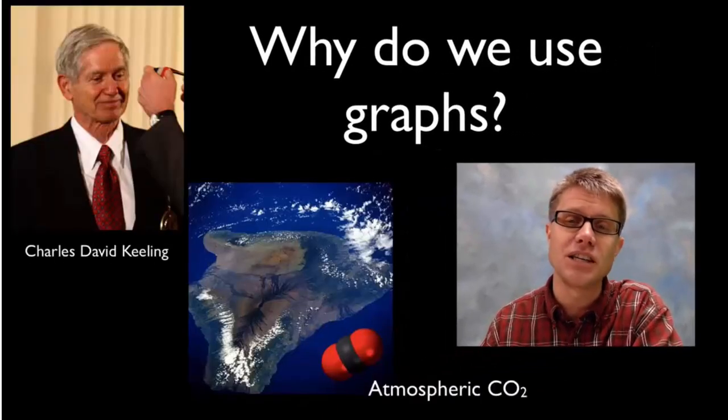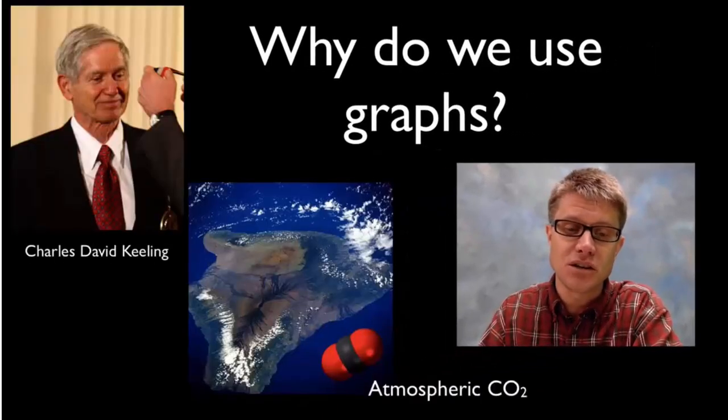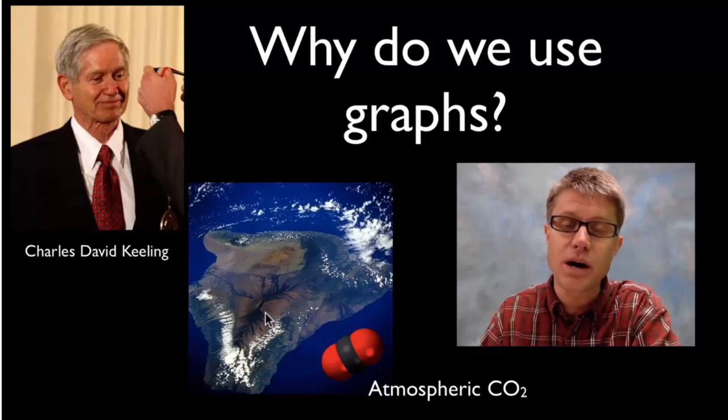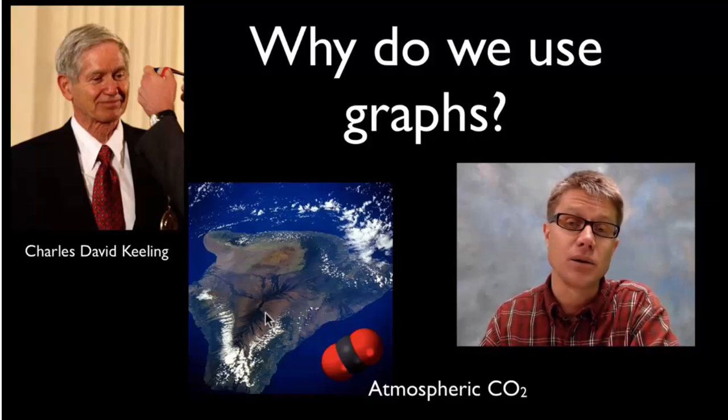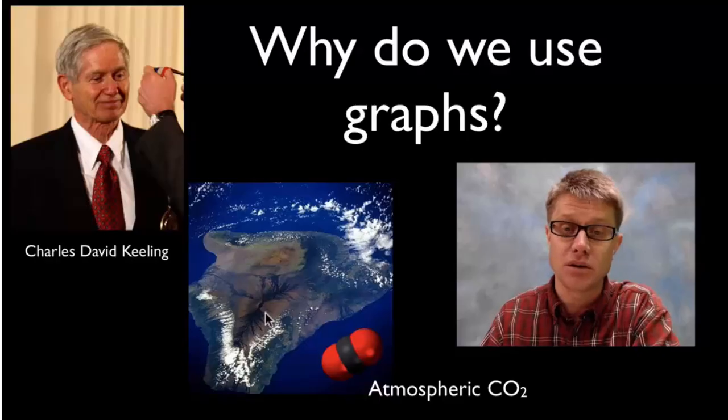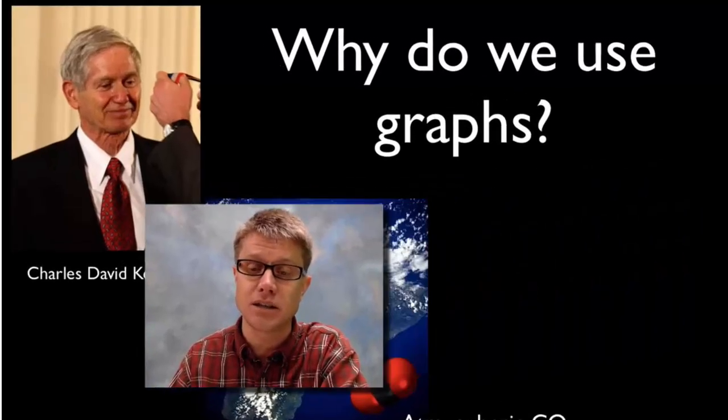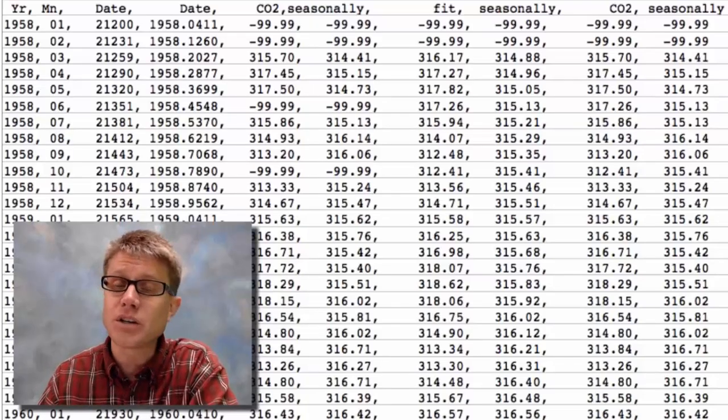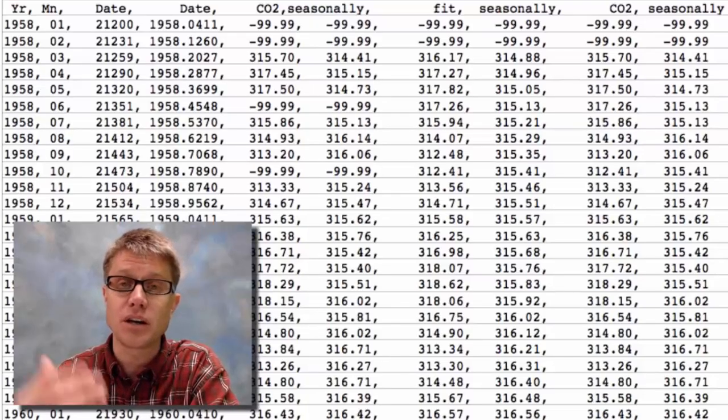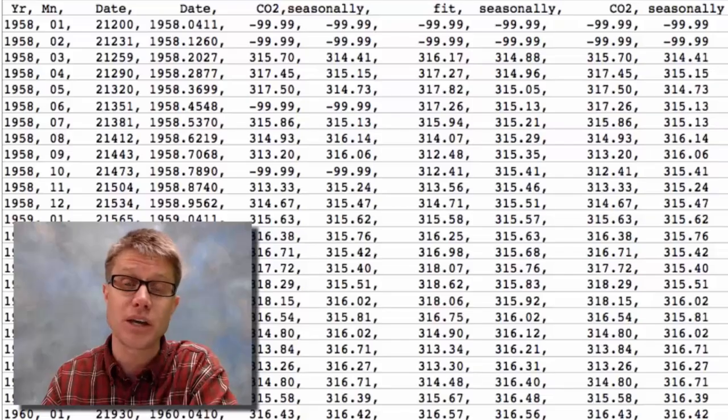This right here is Charles David Keeling. He spent years and years on top of Mauna Loa in Hawaii collecting data on the levels of carbon dioxide in the atmosphere. And let me show you less than 1% of the data that he collected. It's almost incomprehensible to us. When we get a huge list of numbers we can't make sense of it and we can't find patterns.